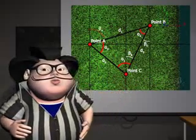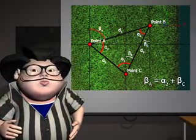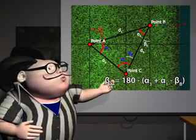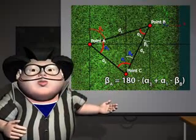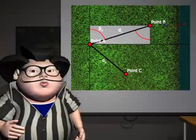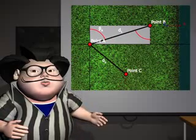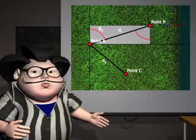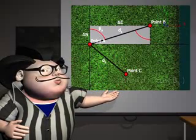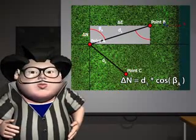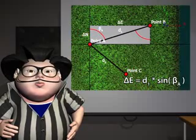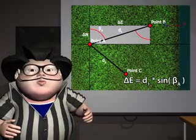Using point B, bearing A is equivalent to alpha 2 plus bearing C. Using point C, bearing A is equivalent to 180 minus the total of alpha 3 plus alpha 1 minus bearing B. Using the triangle rule, two identical triangles exist and can be used to calculate the coordinates of point A. Using trigonometric identities, delta N is equal to D1 times the cosine of beta A, and delta E is equal to D1 times the sine of beta A.